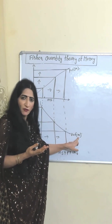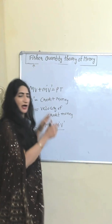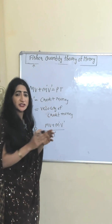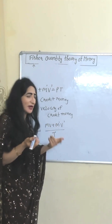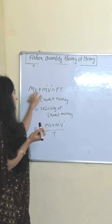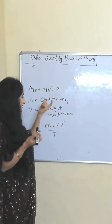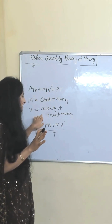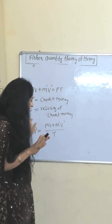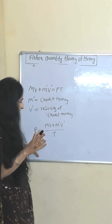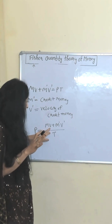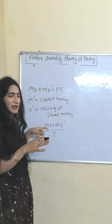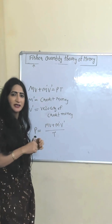The value of money is also a function of money supply. After some time, Fisher revised his equation by adding credit money. M, V, P, and T remain the same as earlier discussed. M-dash represents credit money and V-dash represents the velocity of credit money. This is another way of writing the equation. If V, V-dash, and T are constant, then P and M have a direct relation.